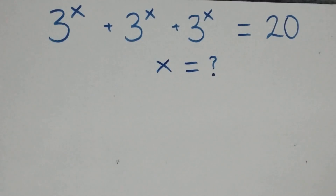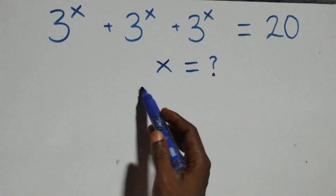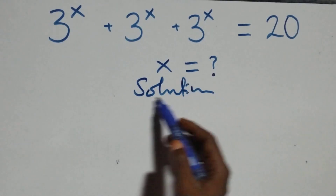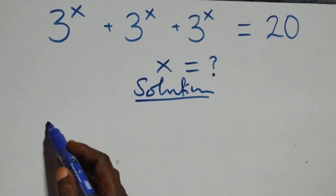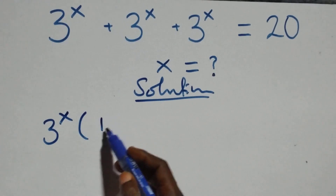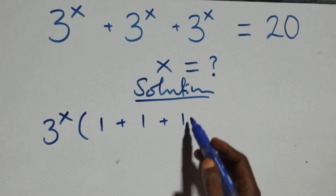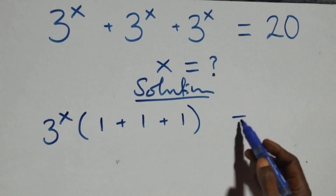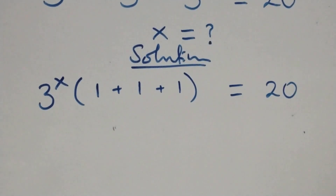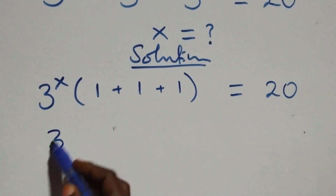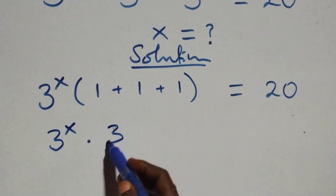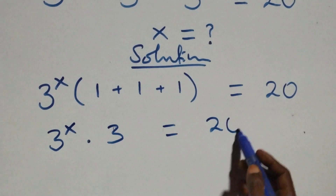Hello, you're welcome. How to solve this nice exponential equation. We factor 3 raised to power x out and we have 3 raised to power x into bracket 1 plus 1 plus 1, which equals 20. This becomes 3 raised to power x times 1 plus 1 plus 1, that's 3, equals 20.